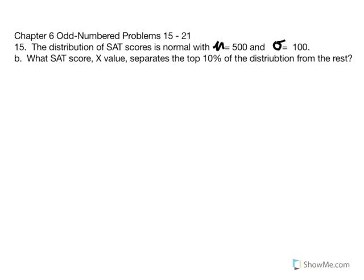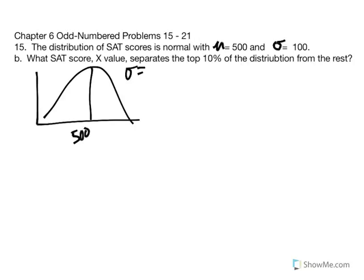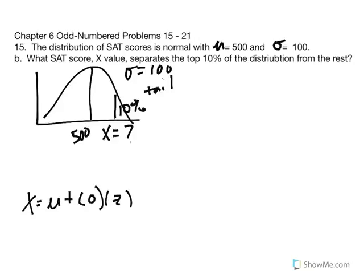The next problem is very similar, using the same data: a SAT distribution where the mean is 500 and standard deviation is 100. We want to find the X value that separates the top 10%. That 10% is in the tail. Again we use the equation: X equals mu plus standard deviation multiplied by the Z score.